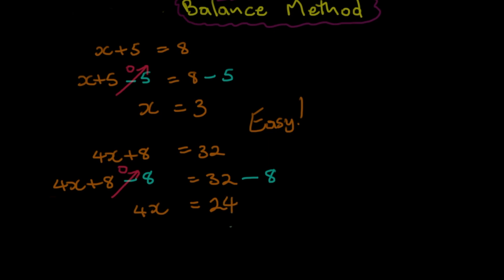We've made headway, but now we have to go a bit further. Mr. 4 is attached to the x, and we say to him, we need to separate you from the x. So we need to divide by 4. 4 into 4 goes once, leaving us with x. And 4 into 24 gives us 6. So we're simply left with x is equal to 6.